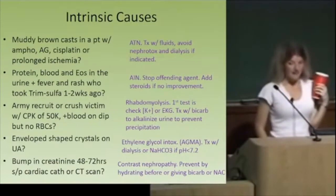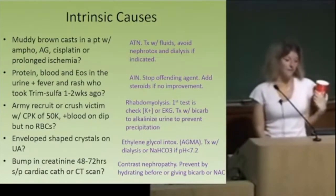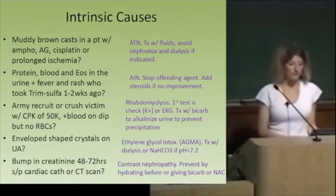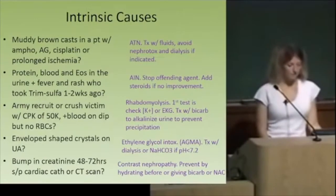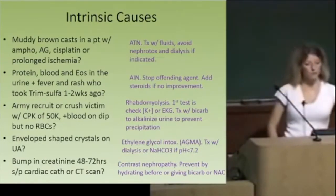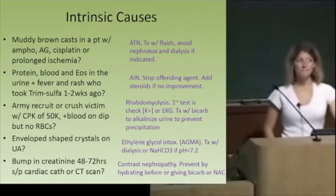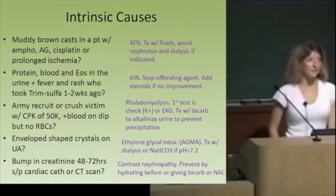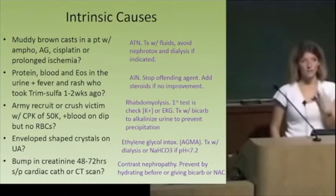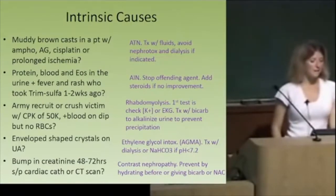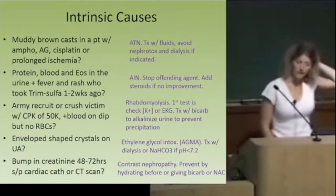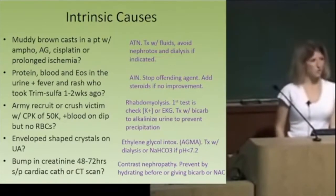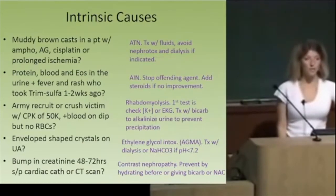That's AIN — acute interstitial nephritis. The treatment is to stop the offending drug, since it's an allergic reaction in the kidney, and steroids can be added if it doesn't resolve. If you have an army recruit or crush victim with sky-high CPK, blood on the dipstick but negative red blood cells — that's rhabdomyolysis. First test: check potassium or get an EKG, because hyperkalemia can cause arrhythmia and death. If you suspect crush injury or rhabdo, always check a potassium level or EKG.